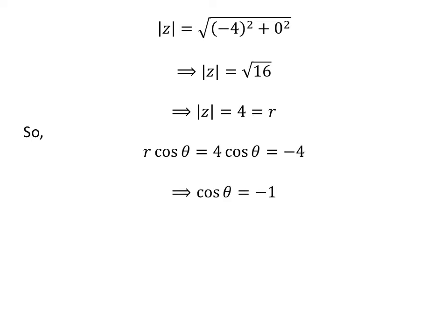As we know, r cos θ = -4, so cos θ = -1. Similarly, we get sin θ = 0.